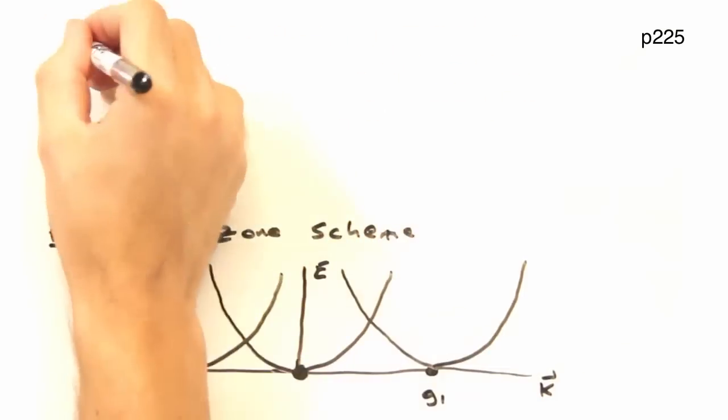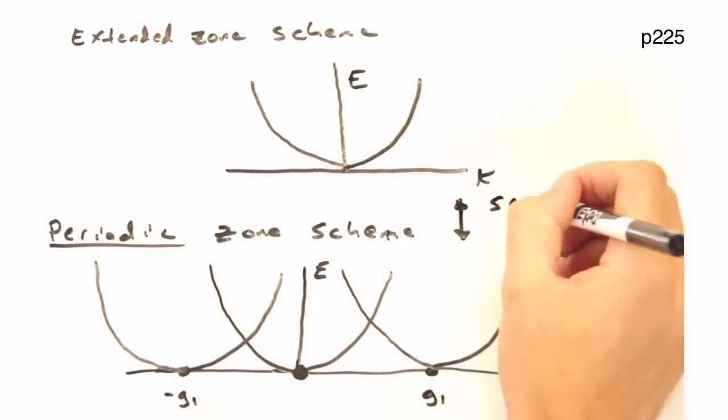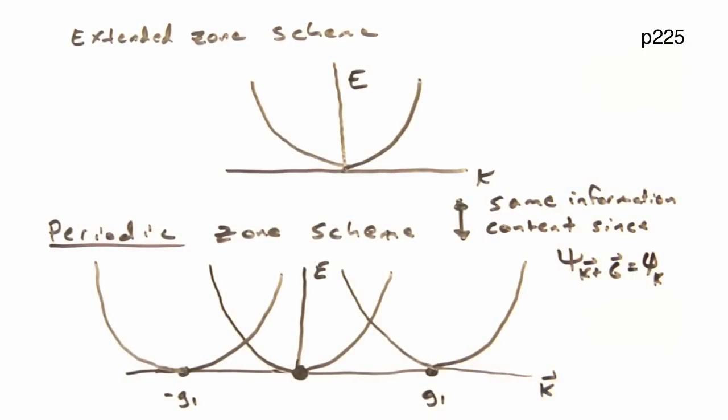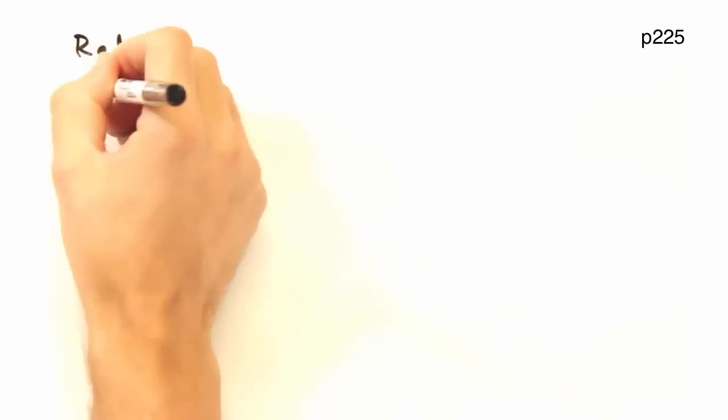We'll call the parabola by itself the extended scheme, and the multiple parabolas the periodic zone scheme. And we're making multiple parabolas because of this whole e k equals e k plus g business. Exactly. This seems like an impractical way of representing the data. Can't we condense this business down? Yeah.